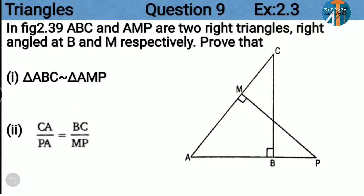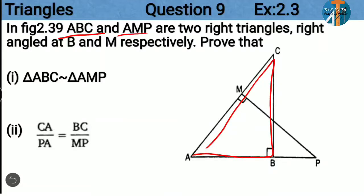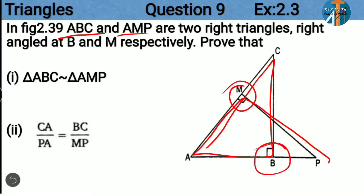The question is like this: in figure 2.39, triangles ABC and AMP are two right triangles. Right triangles means, as you all know, they have a 90 degree angle. So angle M is 90 degrees and angle B is 90 degrees.